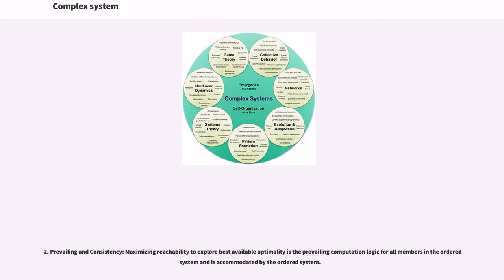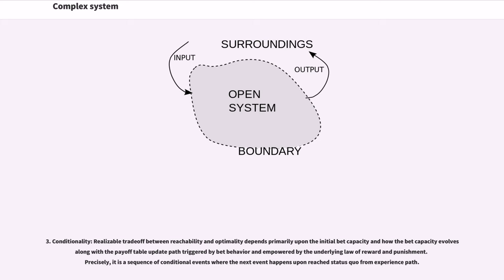2. Prevailing inconsistency: maximizing reachability to explore best available optimality is the prevailing computation logic for all members in the ordered system and is accommodated by the ordered system. 3. Conditionality: realizable trade-off between reachability and optimality depends primarily upon the initial bet capacity and how the bet capacity evolves along with the payoff table update path triggered by bet behavior and empowered by the underlying law of reward and punishment. Precisely, it is a sequence of conditional events where the next event happens upon reached status quo from experience path.